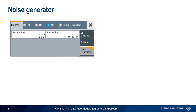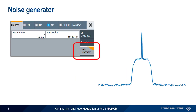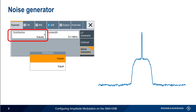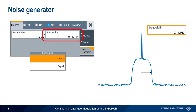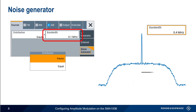We can simulate a wide bandwidth modulating signal, such as human speech, by using the noise generator as our modulating source. We can choose either Gaussian or uniformly distributed noise, and we can also specify the noise bandwidth. Increasing the noise bandwidth causes the sidebands to widen proportionally.